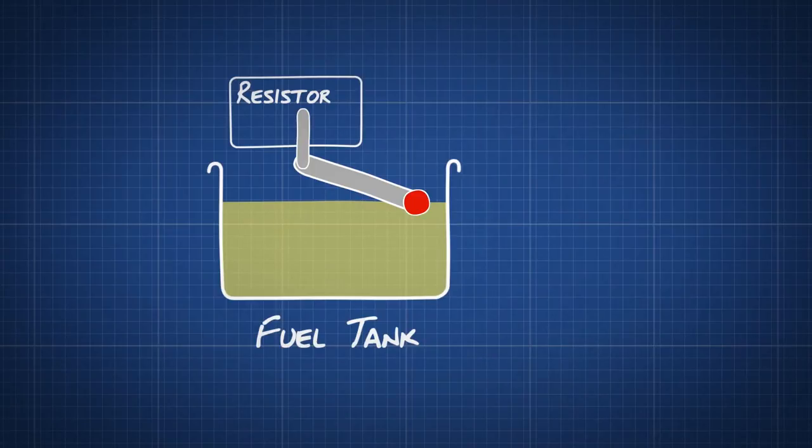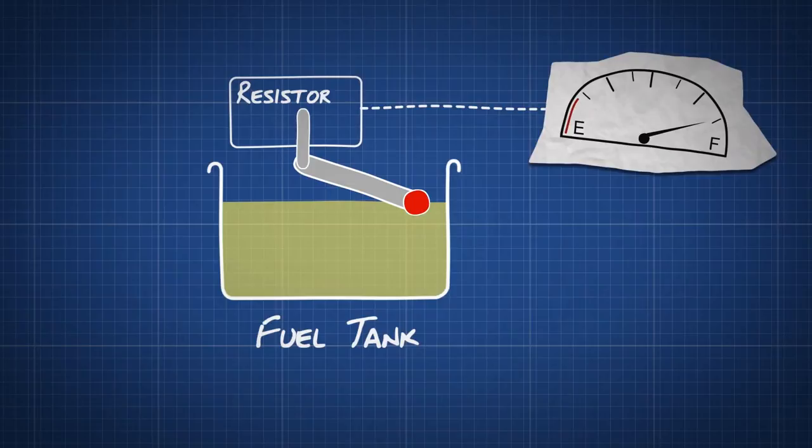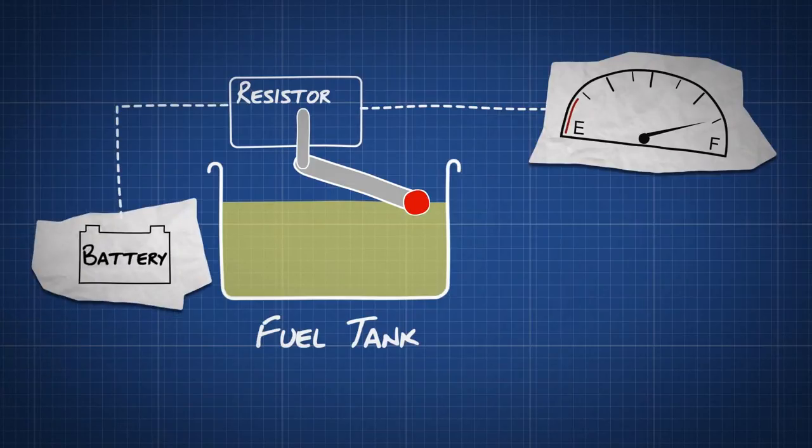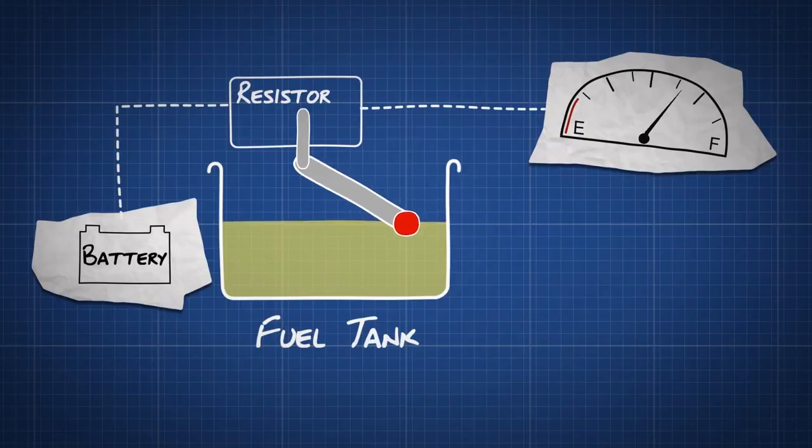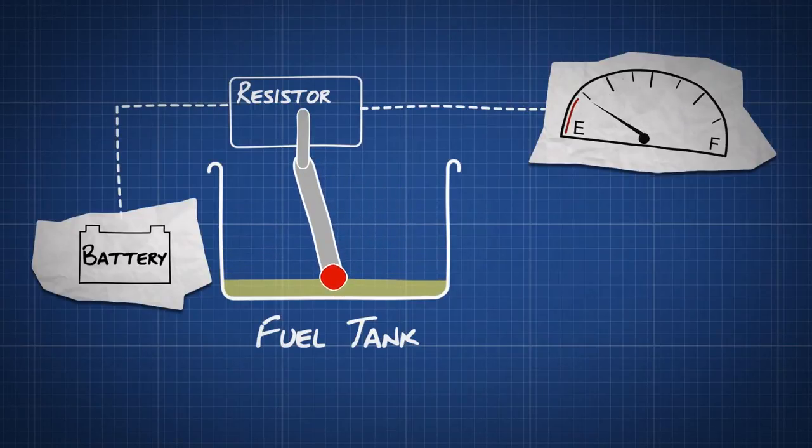This resistor sends an electronic signal to the fuel display. The signal comes from your car's battery via a small coil. The lower the float drops, the more current the resistor sends to the fuel gauge, and the closer your gauge gets to empty.